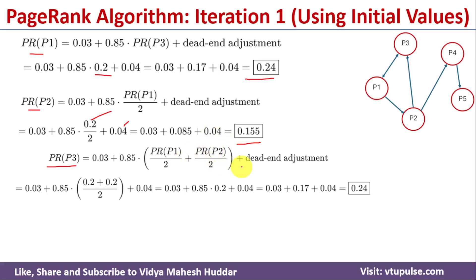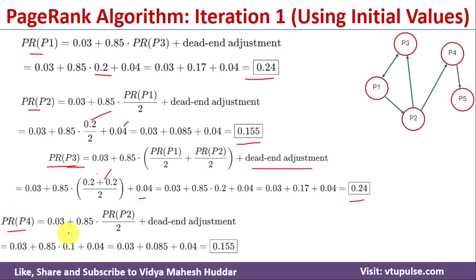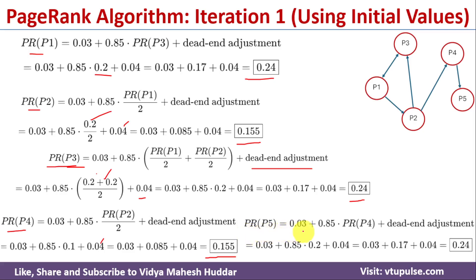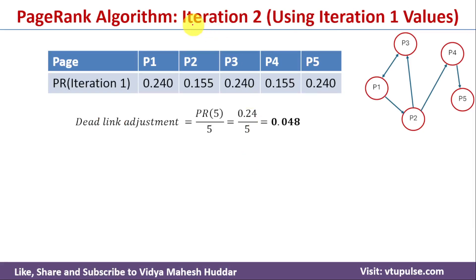Continuing iteration 1: PageRank(P3) with P1 = 0.2, P2 = 0.2, and dead end adjustment 0.04 gives 0.24. PageRank(P4) = 0.03 + 0.425 × 0.2 + 0.04 = 0.155. PageRank(P5) = 0.03 + 0.85 × 0.2 + 0.04 = 0.24. These are the first iteration values.